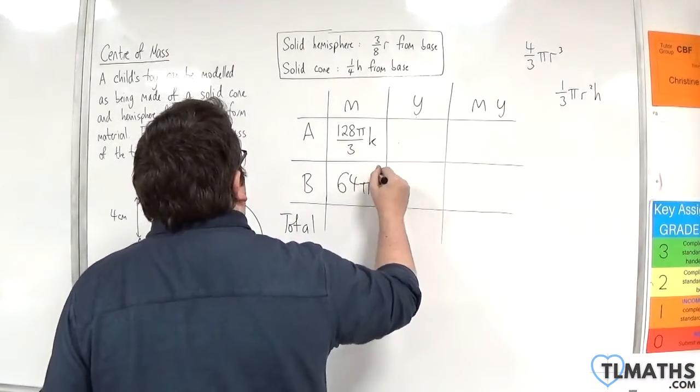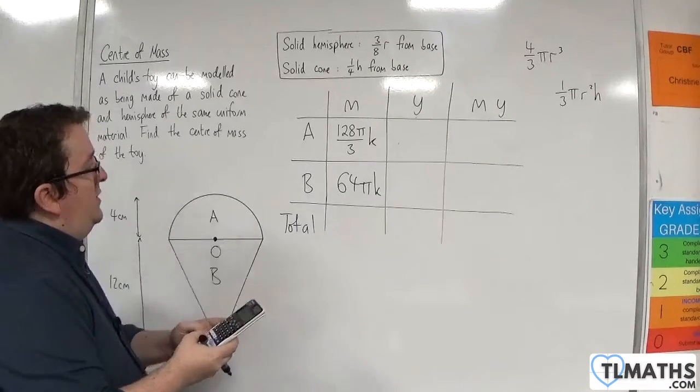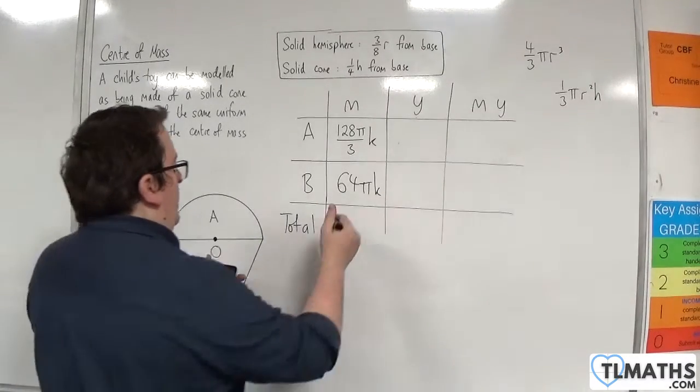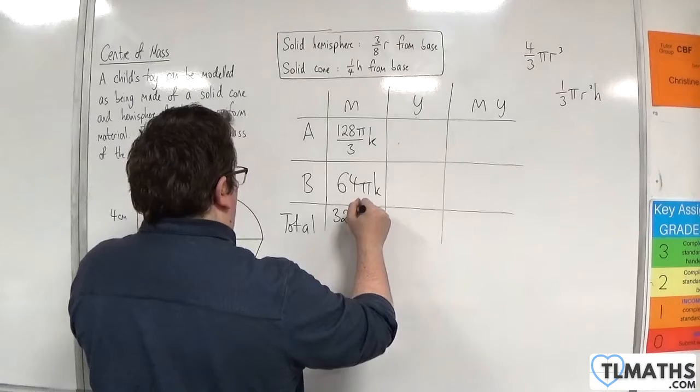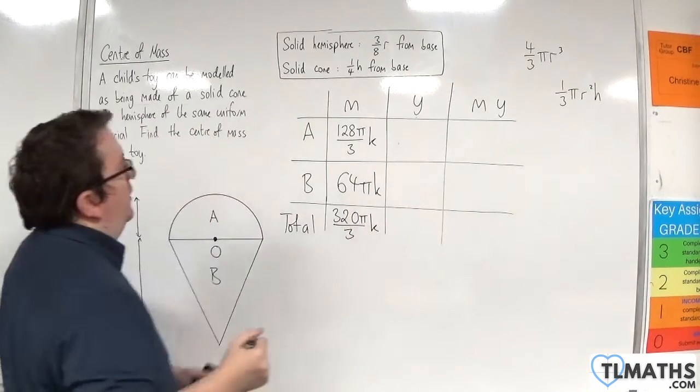So 64 pi K will be my mass. So I've got 64 plus 128 over 3, so that's 320 pi over 3 K. That's my total mass.